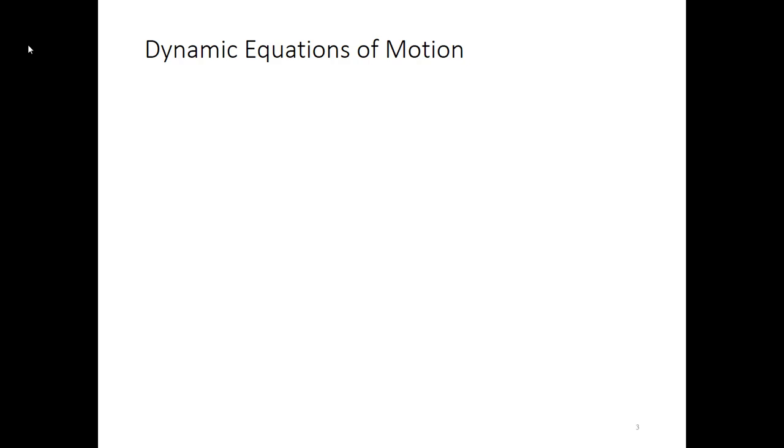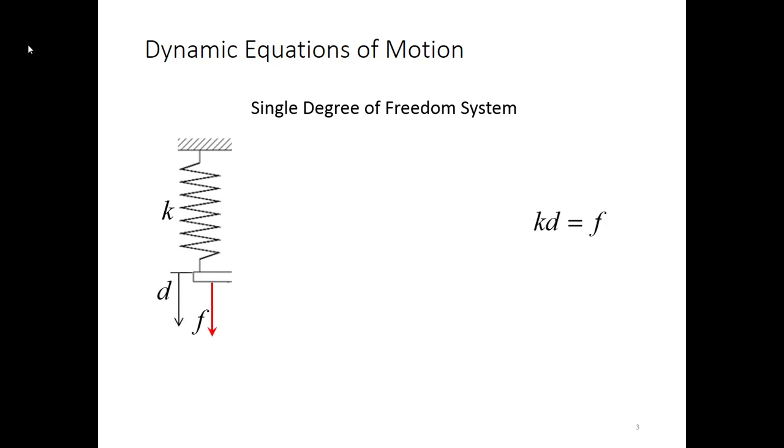Before we can actually see how FE is implemented, we need to do a quick review of what the dynamic equations of motion are for a system. We're going to start out with a single degree of freedom system. Our structure is represented as something with a stiffness K. If it's a single degree of freedom, there's only one thing that can move. In this case, it would be that bar down at the bottom attached to the spring. Then what we do is we apply a force to that system and we track the displacement, and then the FE method has just been the stiffness times the displacement is equal to the force.